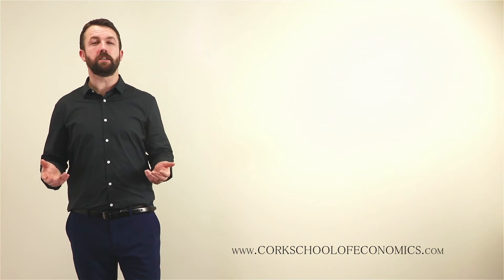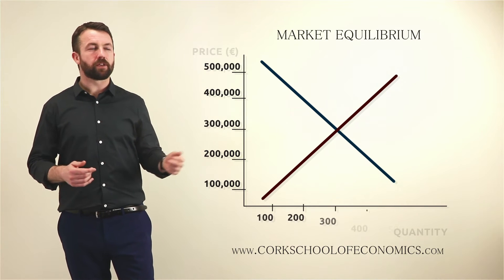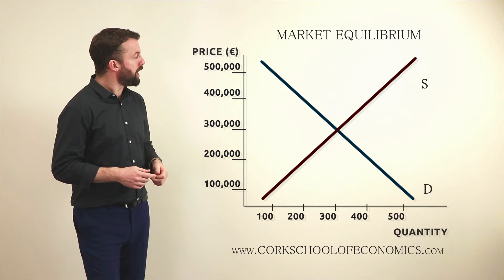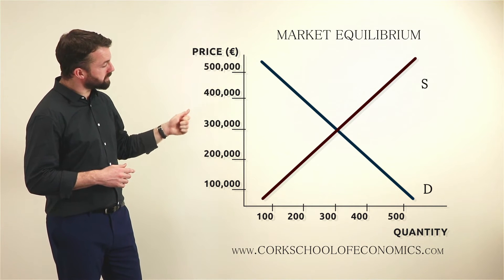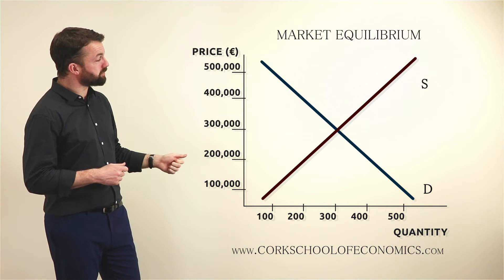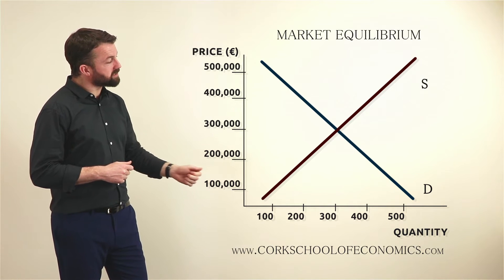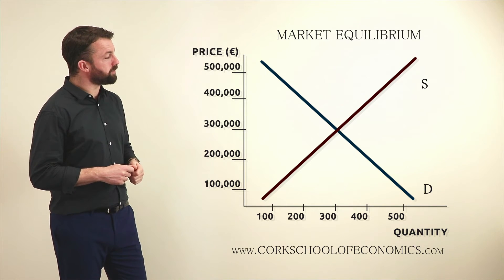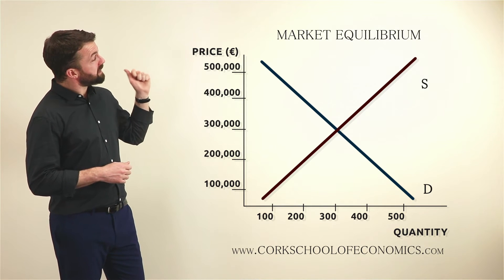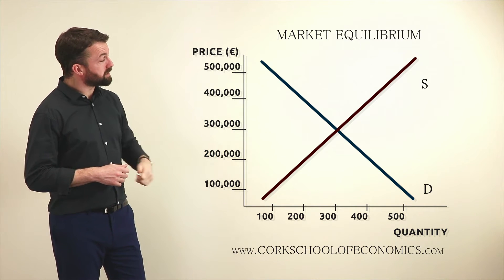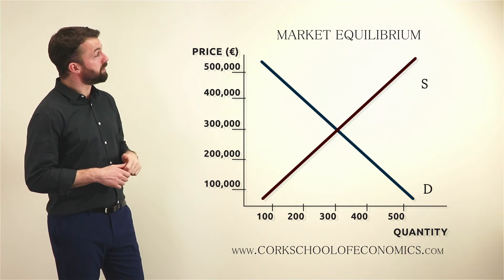So market equilibrium — how do we represent it visually? Take a look at the graphic here beside me. We have the same axes as earlier: price on the vertical axis in hundreds of thousands of euros, and quantity on the horizontal axis in hundreds of units. We have the same demand curve as earlier and the same supply curve as earlier.